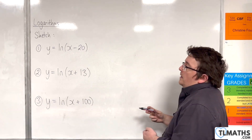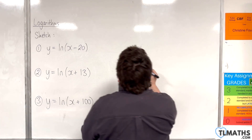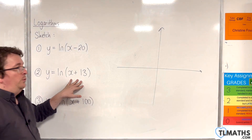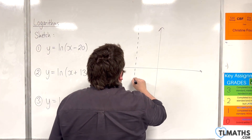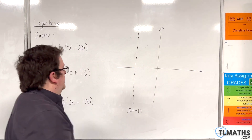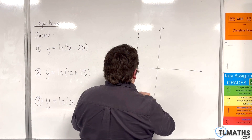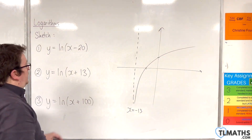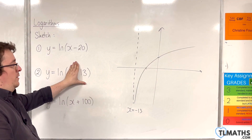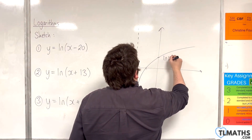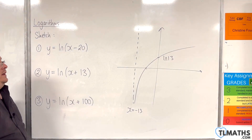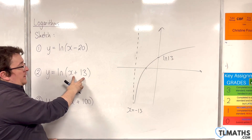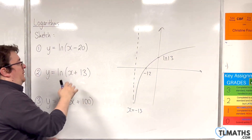The second one: y equals the natural log of x plus 13. Where is the vertical asymptote? That's when the bracket is 0, so x equals minus 13. Then we're going to have our log curve. Two points of interest: where it crosses the y-axis is when x is 0, so we get y equals the natural log of 13. And where it crosses the x-axis is when y is 0 — that is when this bracket is equal to 1, and so that would be at minus 12. Minus 12 plus 13 is 1.